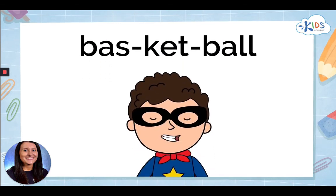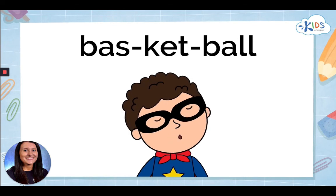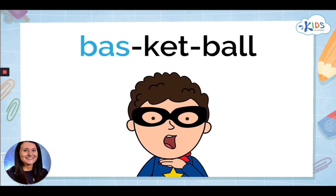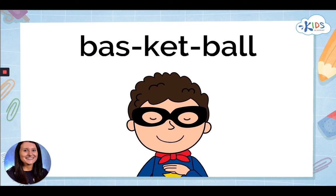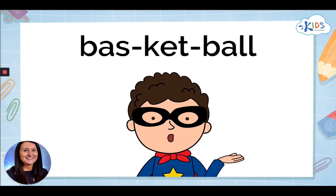You can also check whether you have divided the word into syllables correctly using this trick: say the word out loud and place your hand under your chin as you say it. Bas-ket-ball — my chin hit my hand three times, so this word has three syllables.